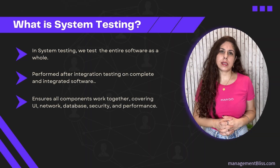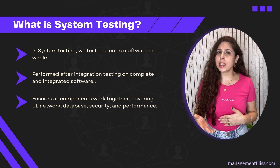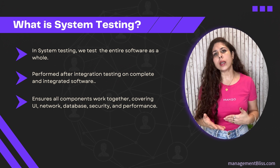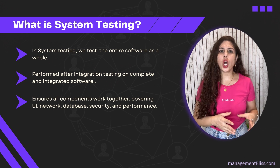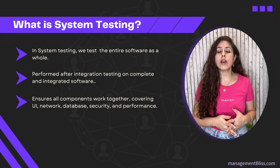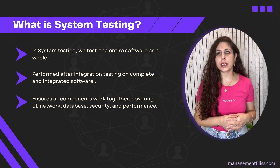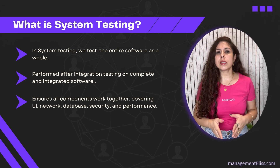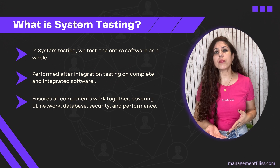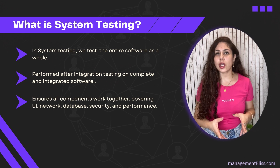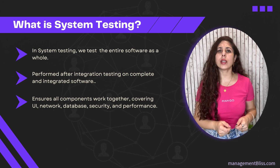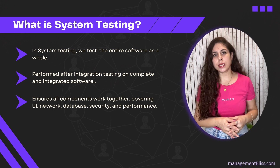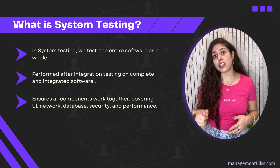What is system testing? System testing is a type of testing in which the entire software is tested as a whole to ensure everything works perfectly together, not just in isolation. It is the third level of software testing, performed after integration testing on complete and integrated software. System testing covers not only the code, but also the user interface, network, database, security, and overall performance to ensure the system is ready for real-world use. It is conducted by the QA team in an environment that mimics the actual production environment.